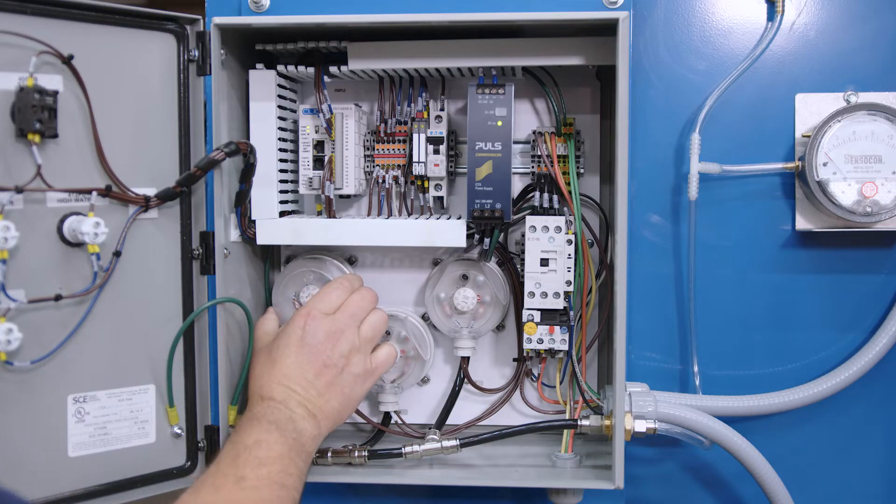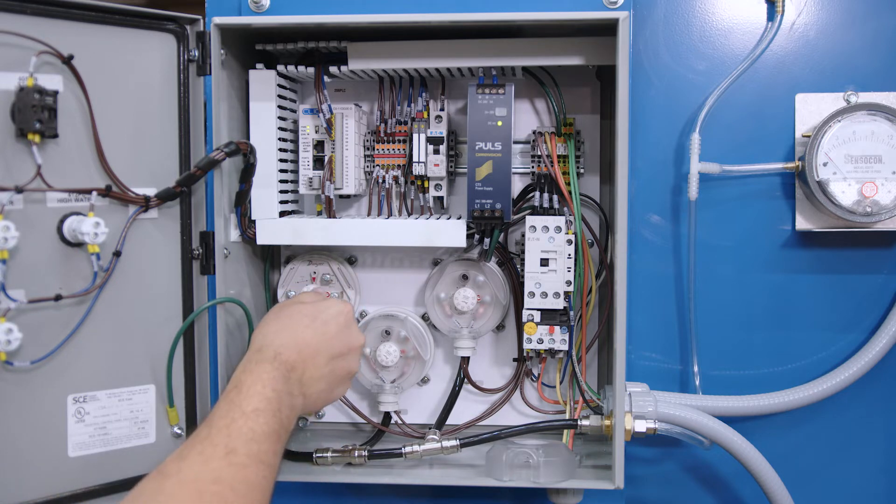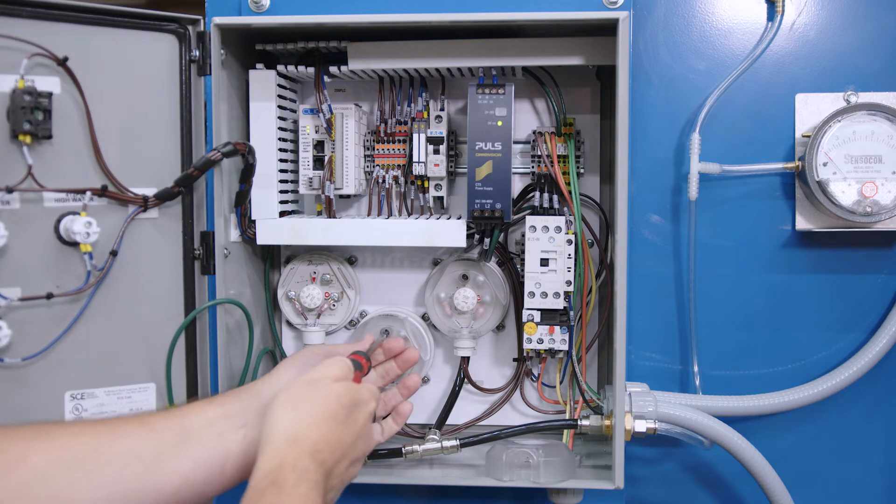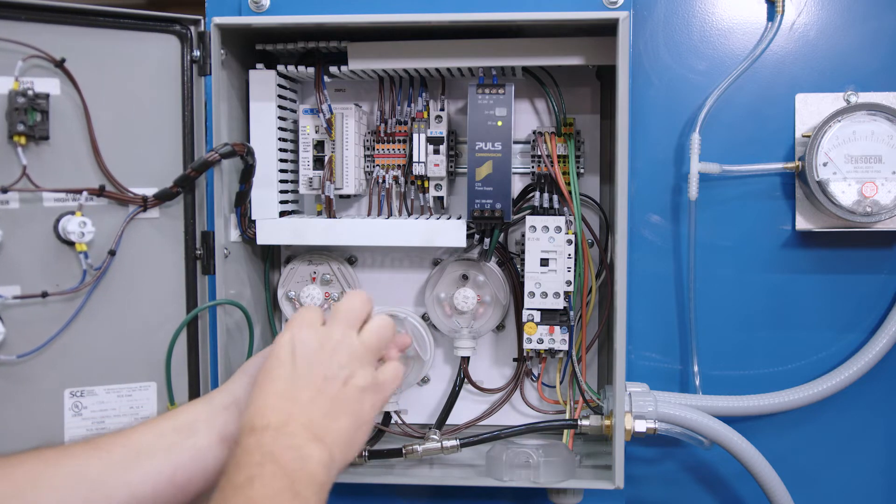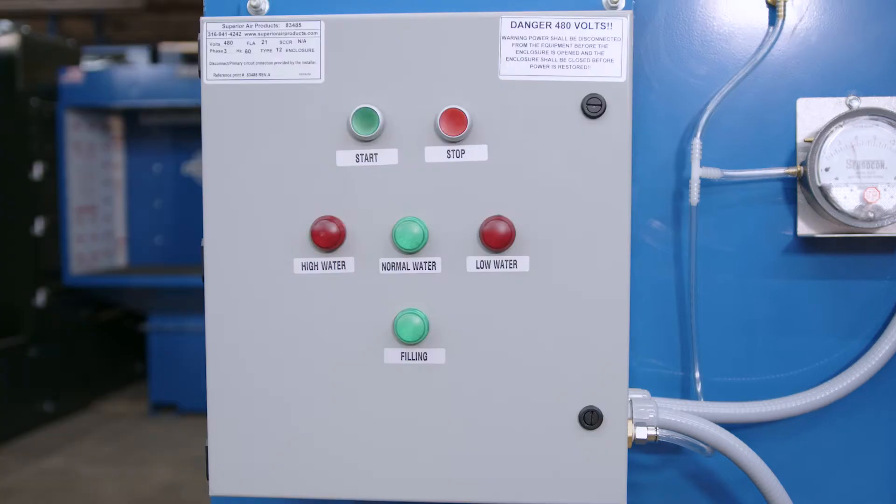The unit is controlled by a pre-programmed PLC unit and three pressure switches. The pressure switches control water levels inside the unit based on static pressure. Per NFPA and OSHA regulations, the Superior Wet Collector will automatically shut down at the low water switch setting or the high water switch setting and display a visual alarm on the control panel.